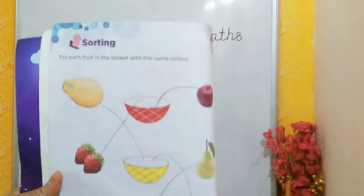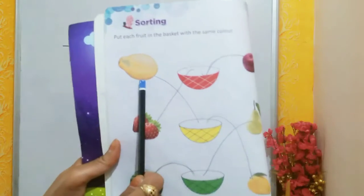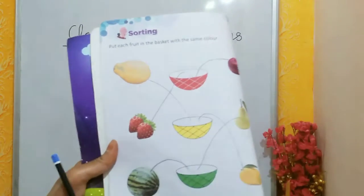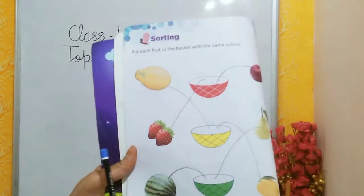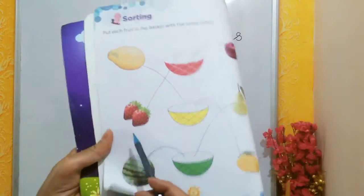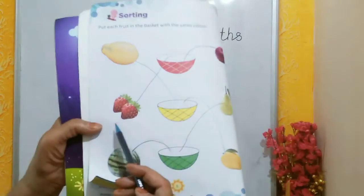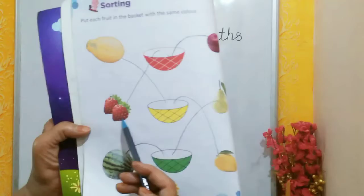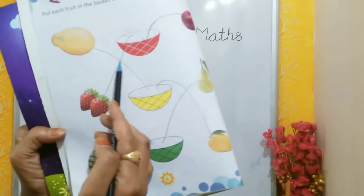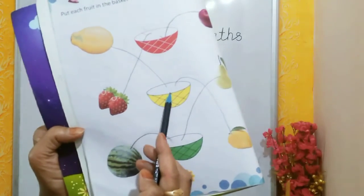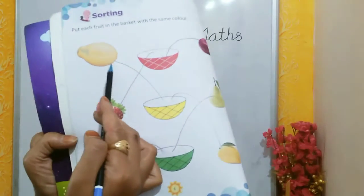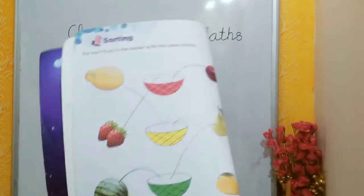What is this? This is a papaya. And what is the color of papaya? Yellow. So we will put the papaya in the yellow basket like this, with the help of a pencil.